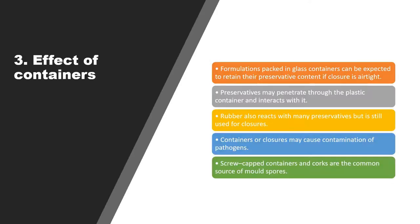The type of container closure system is also very important. Formulations packed in glass containers are expected to retain their preservative content if the closure is airtight. With plastics, however, problems are more common — preservatives may penetrate through plastic containers due to leaching and permeation effects. Rubber also reacts with many preservatives but is still used for closures. Containers and closures may also cause contamination; screw-capped containers and caps are common sources of mold spores.